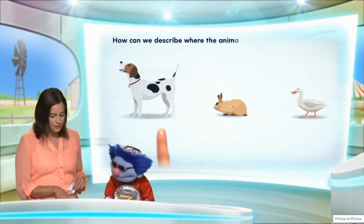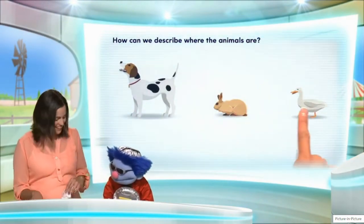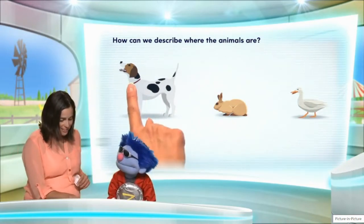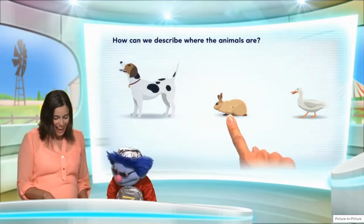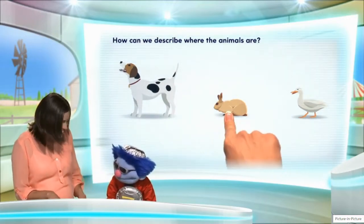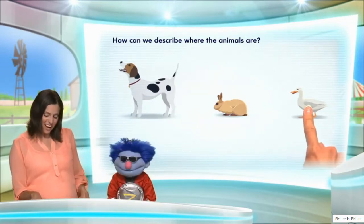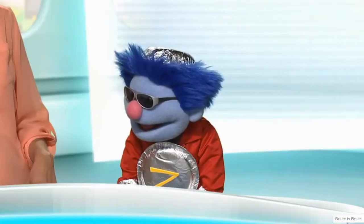Why don't we get started on our math? Okay. How can we describe where the animals are? So we have a dog here, a rabbit, and a duck. The dog is in front of the rabbit. You see that? And the rabbit is in front of the duck. But the duck is behind the rabbit.